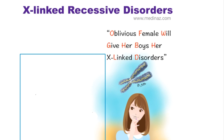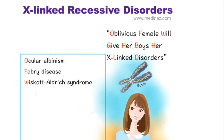Now follow the red letters. O for ocular albinism, A for Fabry disease, W for Wiskott-Aldrich syndrome, G for G6PD deficiency, H for Hunter syndrome.